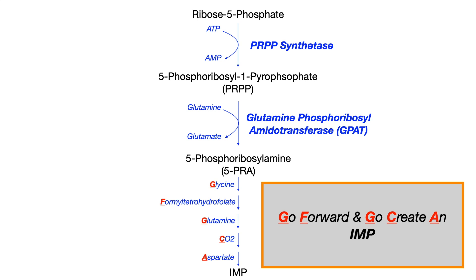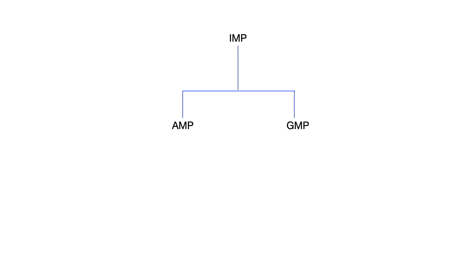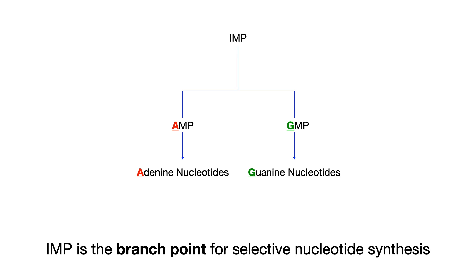IMP can be converted into either AMP or GMP. AMP will be used to create adenine nucleotides, and GMP will be used to create guanine nucleotides. IMP is therefore the critical branch point in de novo purine synthesis. Notably, the conversion of IMP to GMP is done by the enzyme inosine monophosphate dehydrogenase, and there are various medications that inhibit this enzyme.